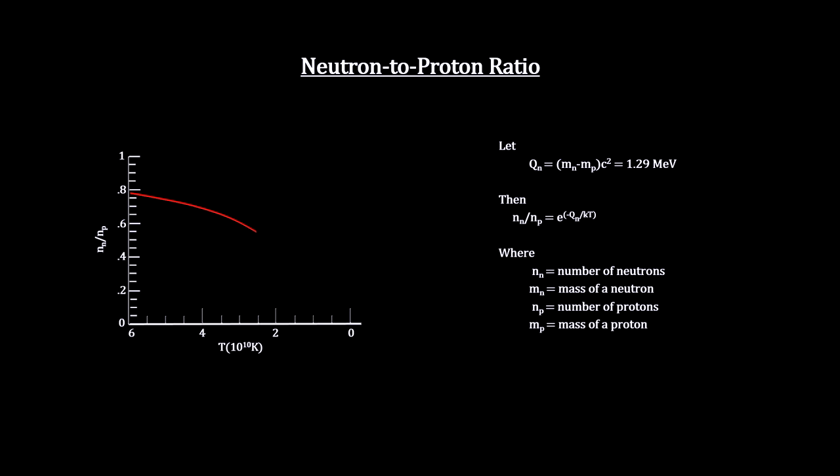Left unchecked, the universe would have had only one neutron left for every million protons by the time it was only six minutes old.